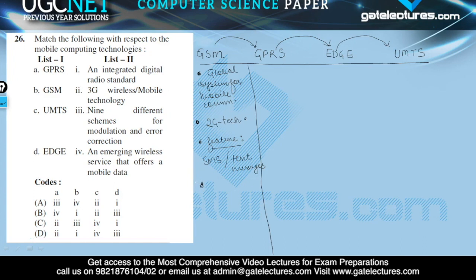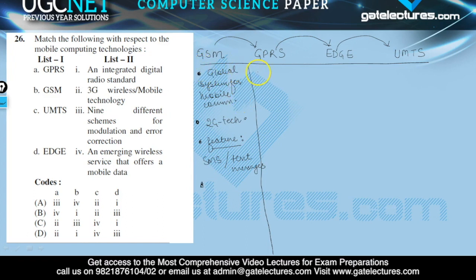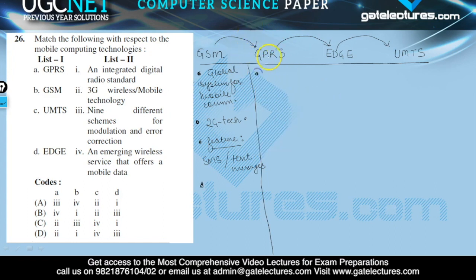GSM provides the capability to download content from the service provider, such as ringtones, logos, or pictures. However, the data communication speed is slow, and because of this drawback, we came up with the enhanced version of GSM — GPRS. The full form of GPRS is General Packet Radio Service.